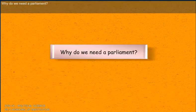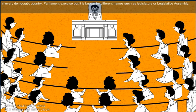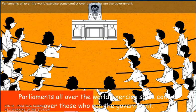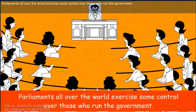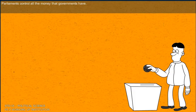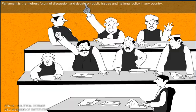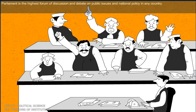Why do we need a parliament? In every democratic country, parliament exercises power and is known by different names such as legislature or legislative assembly. Parliaments all over the world exercise some control over those who run the government and control all the money that the government has. Parliament is the highest forum of discussion and debate on public issues and national policy in any country.